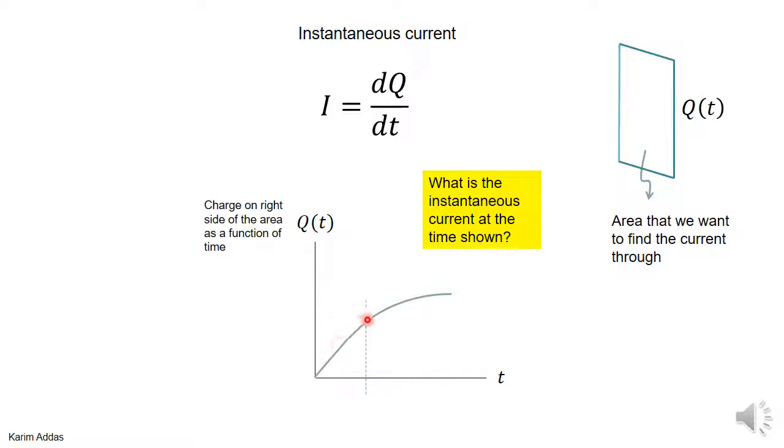This is for instance what it looks like. We want to get the current at a specific time, so the instantaneous current.